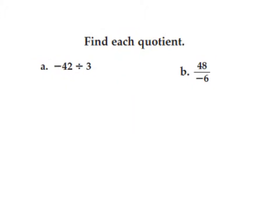In our next slide, we also have the same directions. Find each quotient. Problem A is negative 42 divided by 3. I have different signs, so my answer is going to be negative. So, that means I'm just going to set up a division problem.